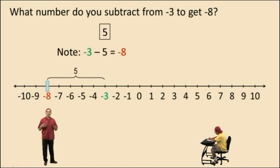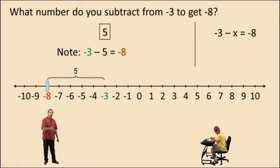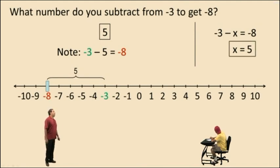Now, how will you be asked this question in algebra? You'll be given an equation like this: negative 3 subtract what number x is equal to negative 8? And we know the answer is x equals 5. That's the unknown number. Now, we'll talk more about algebra later in the semester, but that's it for now. We'll see you again soon!